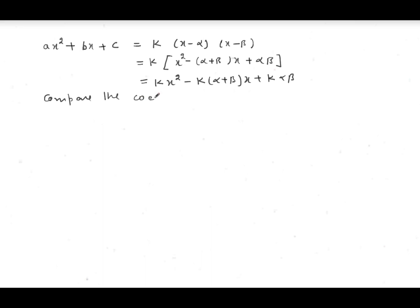Now I'm going to compare the coefficients. On the left-hand side, a is the coefficient of x^2, and k is the coefficient of x^2 on the right-hand side, so a equals k. The coefficient of x on the left is b, and on the right it is minus k(alpha plus beta), so b equals minus k(alpha plus beta). The constant term on the left is c, and on the right is k·alpha·beta, so c equals k·alpha·beta.